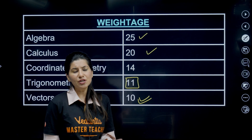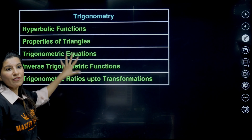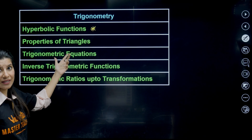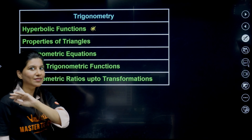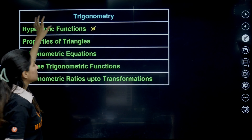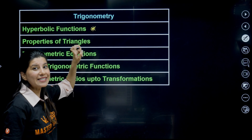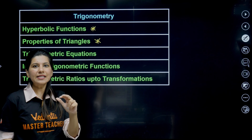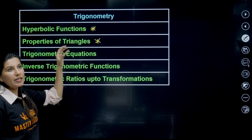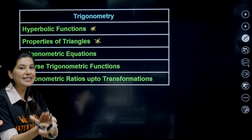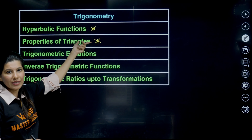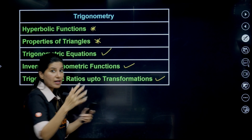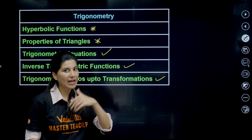Now let's discuss how the EAPCT syllabus differs from JEE Main. From trigonometry, hyperbolic functions is a topic specific to EAPCT — don't be scared by the name, it is actually the easiest topic from trigonometry. Properties of triangle is unfortunately not in JEE Main, but it is still doable as some parts intersect with JEE Main content. Trigonometric equations, inverse trigonometric functions, and trigonometric ratios up to transformations — sum-to-product and product-to-sum formulas — are all included.